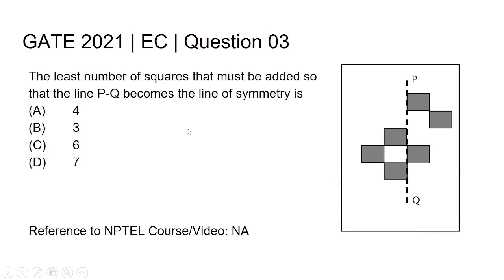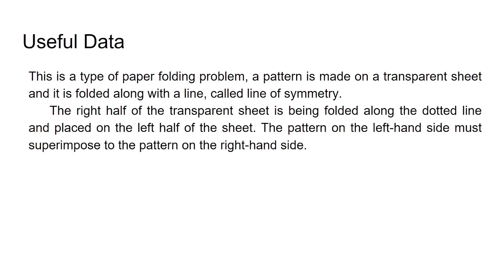This is GATE 2021 Electronics and Communication Engineering, question number 3. The least number of squares that must be added so that the line PQ becomes the line of symmetry is: option A: 4, option B: 3, option C: 6, option D: 7.